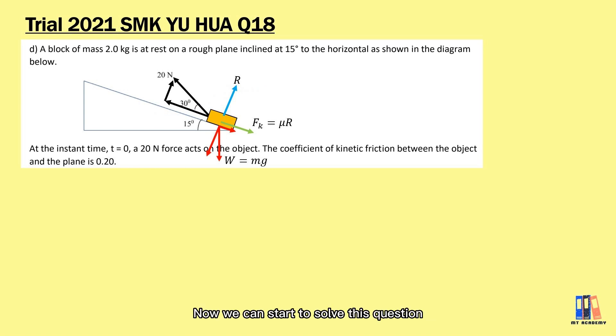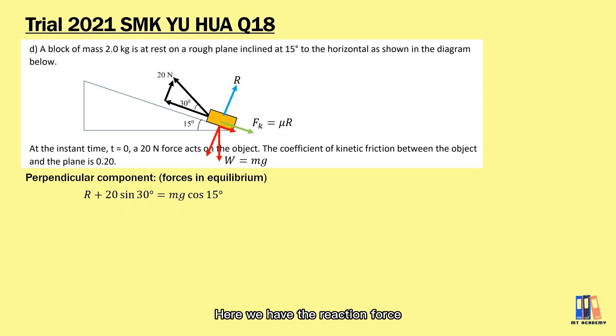Now we can start to solve this question. We start from the perpendicular component where the object is assumed always stay on the plane surface. So we have the forces in equilibrium. Here we have the reaction force plus the perpendicular component of 20 newton force. Solving this will give us the reaction force equal to 8.95 newton.